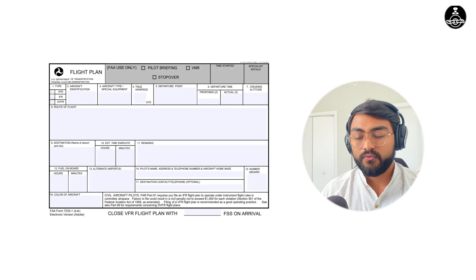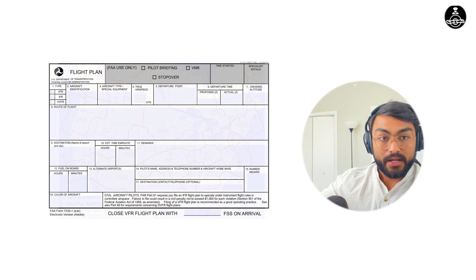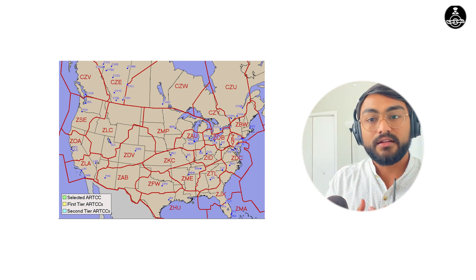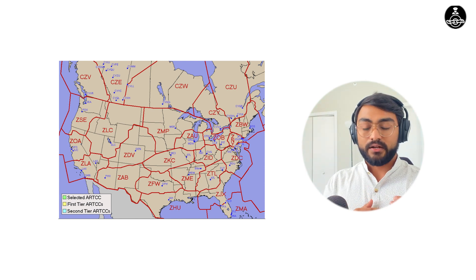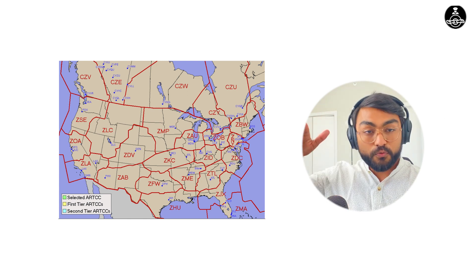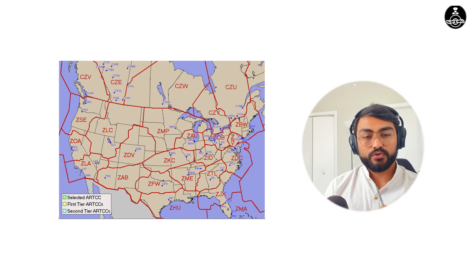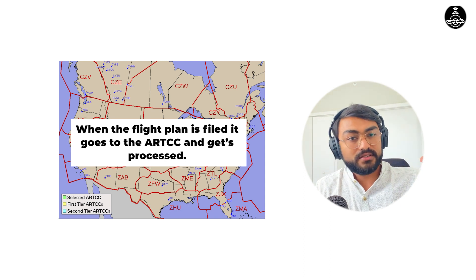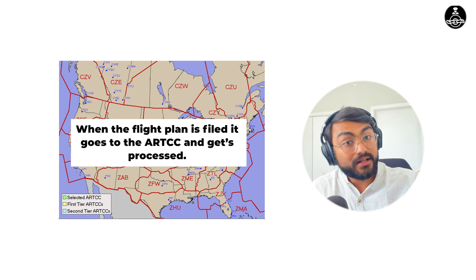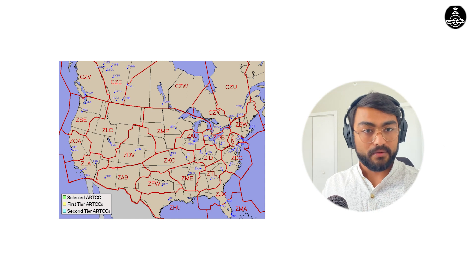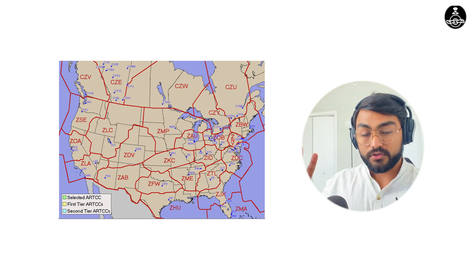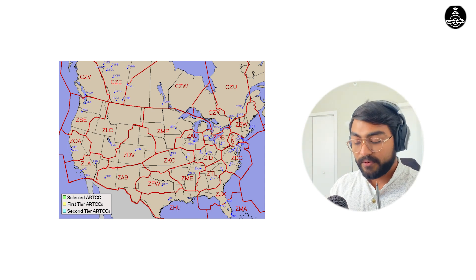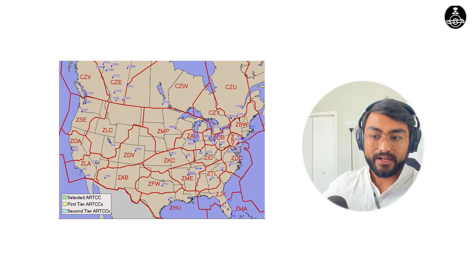To understand why we got a clearance void time, we first need to understand how the clearance is generated. Whenever you file your IFR flight plan, it goes to the ARTCC. When it goes into the system, they process all of these flight plans to make sure there are no conflicting flight paths or timings — they don't want someone flying over you when you are departing, for example. It's an algorithm that checks for this, and then a clearance is generated. Not always do you get exactly what you filed. If you filed 4,000 but there was a traffic separation problem at 4,000, they can give you a different altitude. So the clearance you received was not randomly generated.